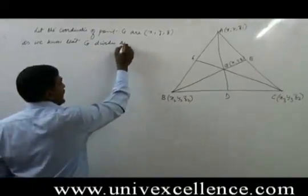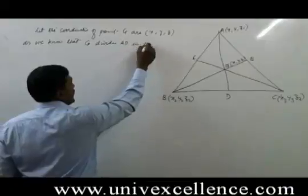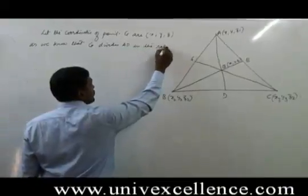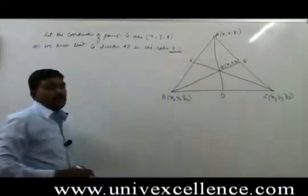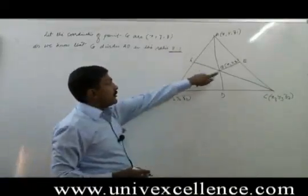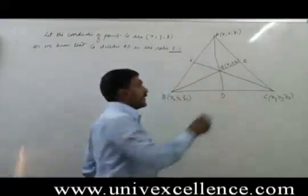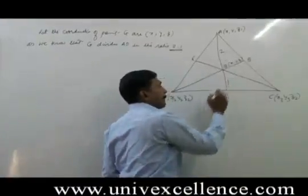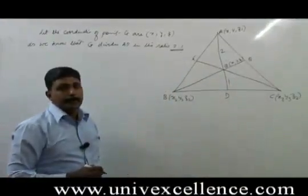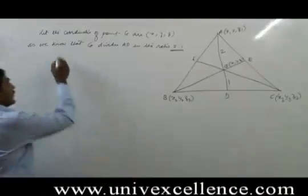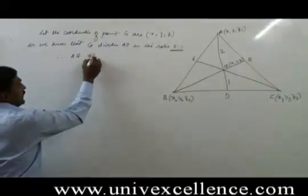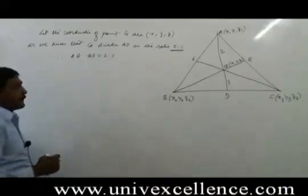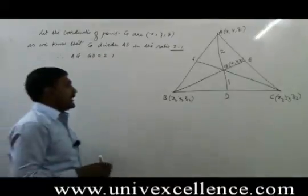divides AD in the ratio 2:1. The centroid divides a median in the ratio 2:1, so therefore AG:GD = 2:1. Now D is the